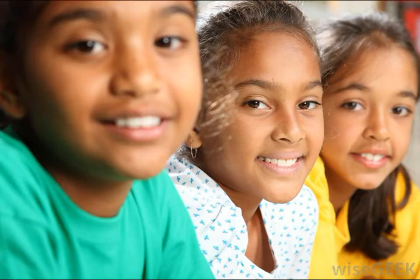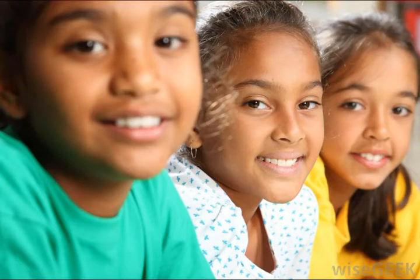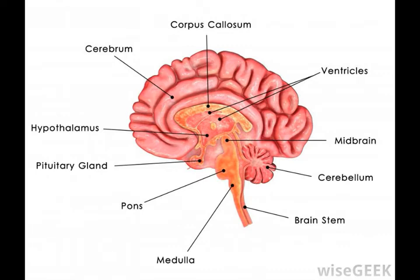FSH triggers single egg production and release every 28 days, making it necessary for a woman to create a uterine lining that can cushion a fertilized ovum or be expelled as reproductive waste during menstruation. Estrogen causes the growth and thickening of that uterine lining, also known as the endometrium. Without estrogen and FSH, female reproduction would not be possible.